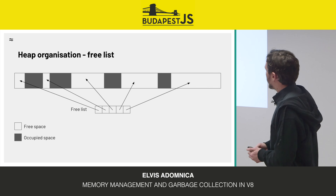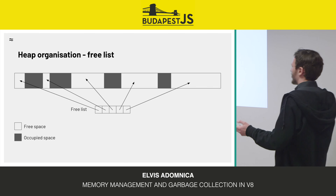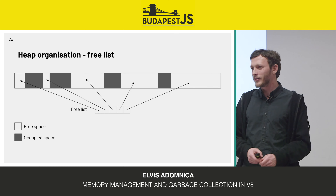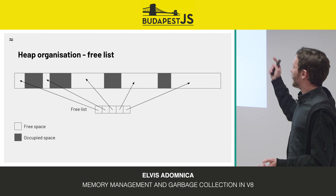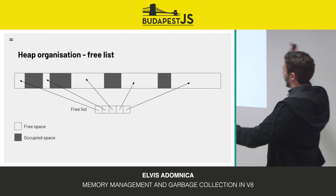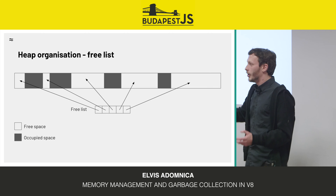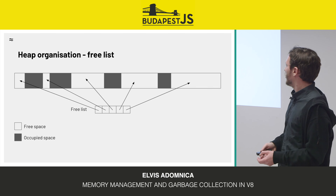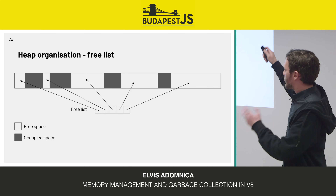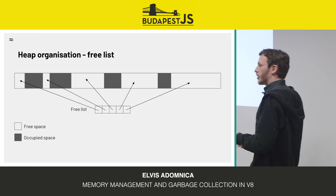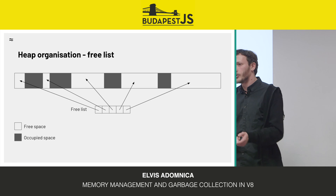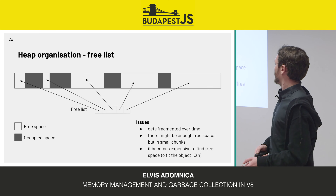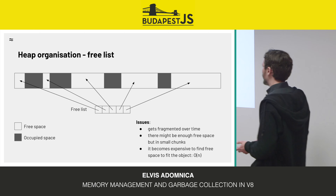The way you can organize the heap is quite simple. We all did free lists in Computer Science 101. You have the entire heap as one node, and as you allocate chunks you keep track of the free space. The occupied space is in between. But as this process goes on, you're going to be suffering from fragmentation — the memory gets fragmented over time.